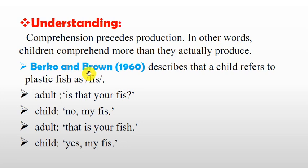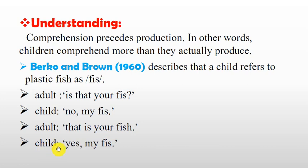Burko and Brown describe an example: a child refers to a plastic fish as 'piss'. The adult says 'Is that your fish?' The child replies 'No, my piss.' The adult repeats 'That is your fish.' The child responds 'Yes, my piss.' This illustrates that the child understands the word but cannot yet produce it correctly.